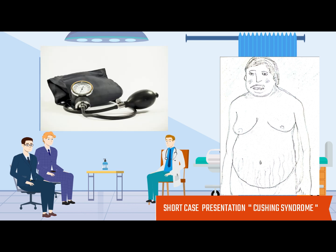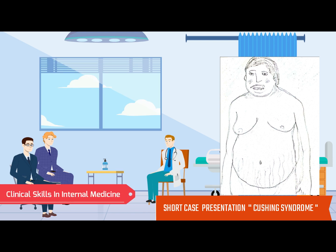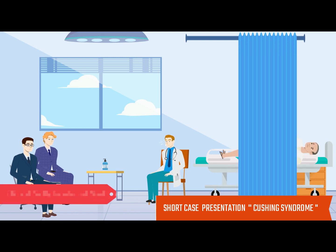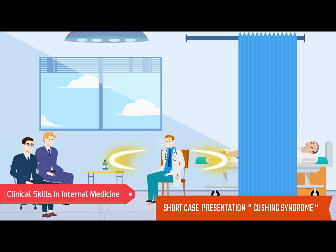Blood pressure of the patient is 160 over 80 mmHg. There is proximal myopathy. On auscultation of the chest there are fine crackles at the middle and lower parts of the chest bilaterally. On examination there is spinal tenderness. There is no visual abnormality.